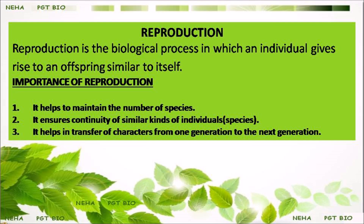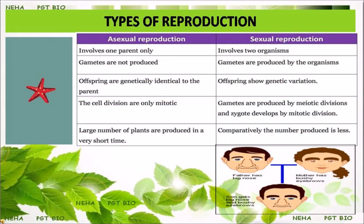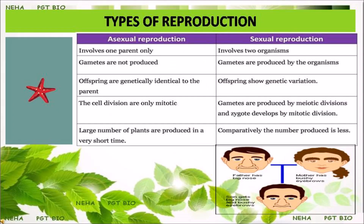Reproduction helps to maintain the number of species and ensures continuity of similar kinds of individuals. It also helps in transfer of characters from one generation to the next. There are two types of reproduction: asexual reproduction and sexual reproduction. In asexual reproduction, only one parent is involved, whereas in sexual reproduction two parents are involved.